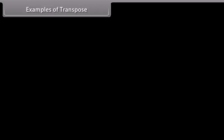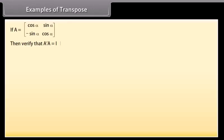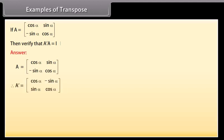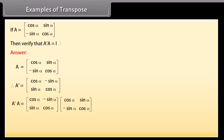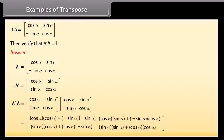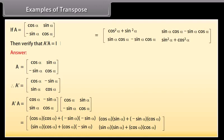Example of transpose: If A is given, then verify that transpose of matrix A into matrix A is the identity matrix. A is given. Therefore, its transpose A' is matrix row-wise, first row: cos α, -sin α; second row: sin α, cos α. Multiplying A transpose and A and solving, we get A transpose × A is equal to the identity matrix. Hence verified.